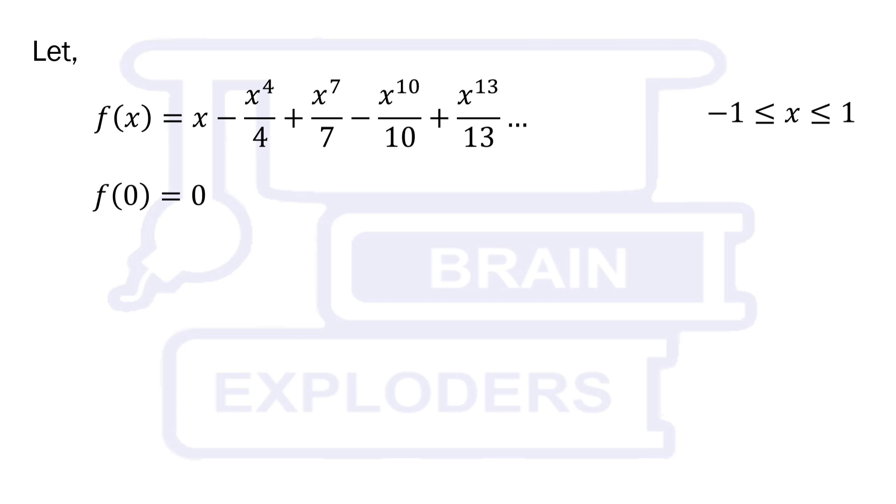On putting x equals 0 and 1, we get f(0) equals 0 and f(1) equals 1 minus 1 by 4 plus 1 by 7 and so on, respectively.